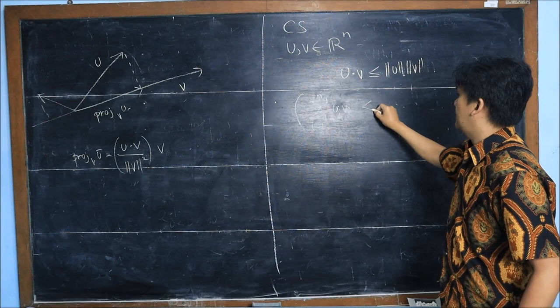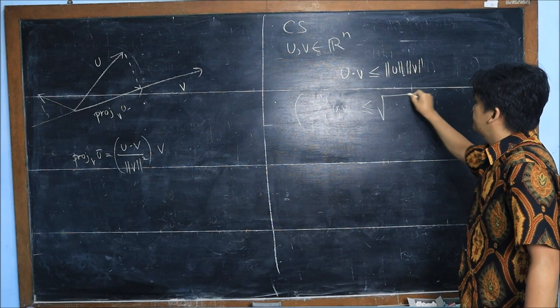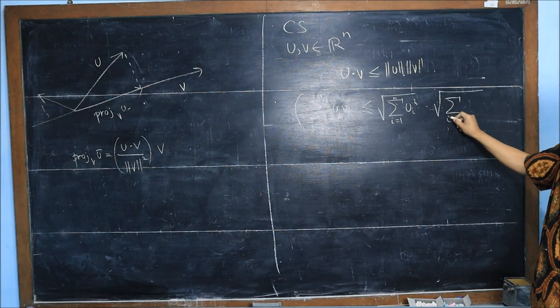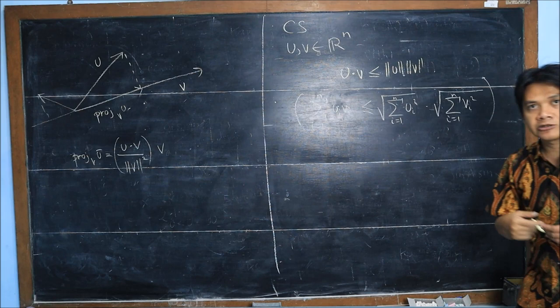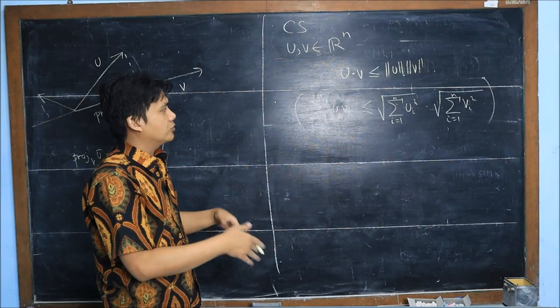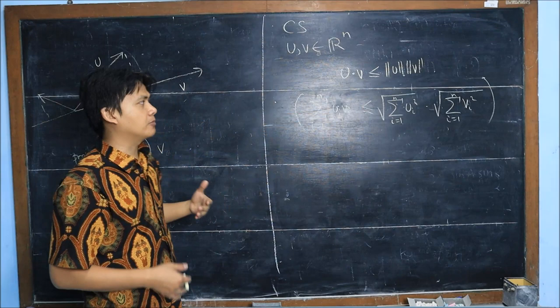On the left hand side, we have the sum of u_i times v_i, and on the right hand side, remember that the length of u is the square root of the sum of u_i squared, and similarly for v. This is the form with summation of two sequences of numbers.